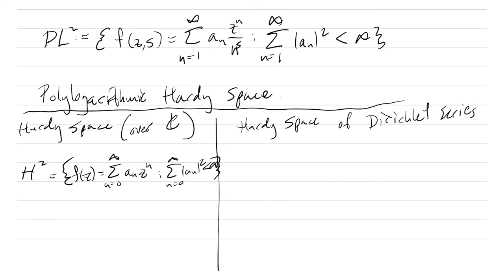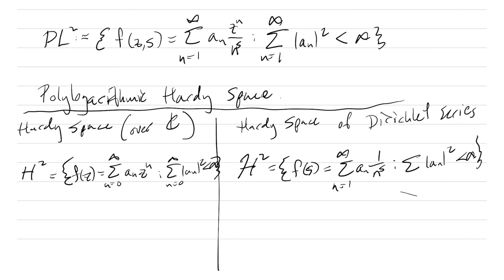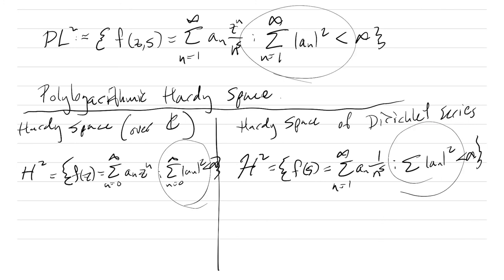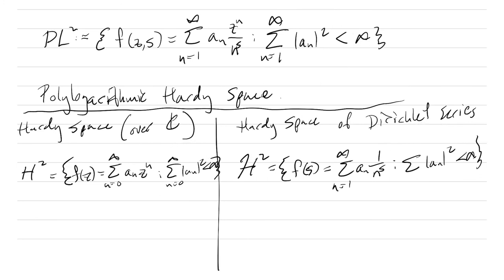The Hardy space of Dirichlet series consists of functions F(S) = sum from n=1 to infinity of a_n times 1/n^s, again with the sum of |a_n|² finite. The condition that the sum of |a_n|² is finite makes it a Hilbert space; the square root of this sum gives the norm, which leads to a natural inner product.